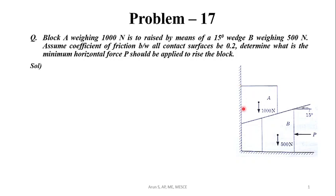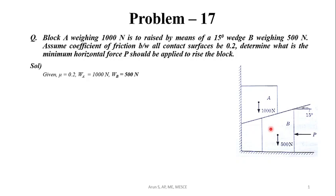I am going to figure it out. Block A weight is 1000 N, and the wedge B weight is 500 N. There are three contact surfaces: block A to the vertical surface, block A to wedge B, and wedge B to the horizontal surface. We apply coefficient of friction 0.2 at all surfaces. We have to find the minimum force P to raise block A in the upward direction.